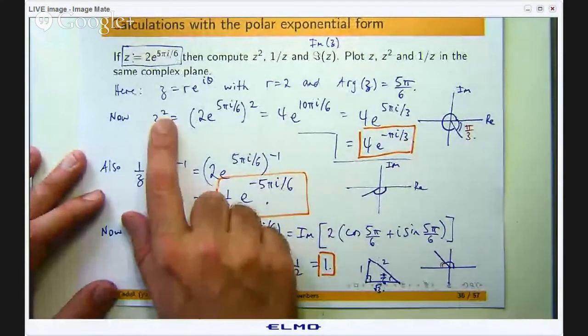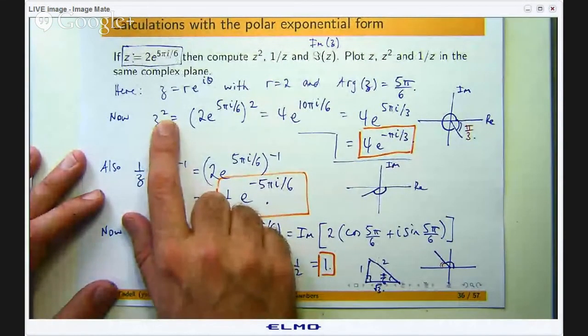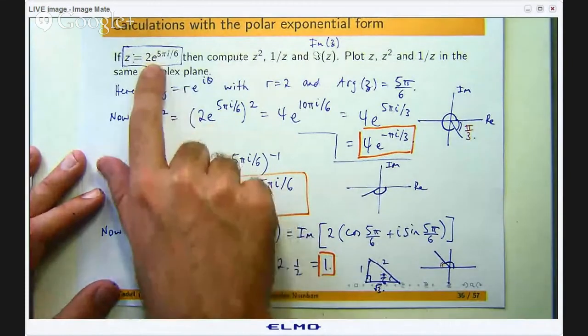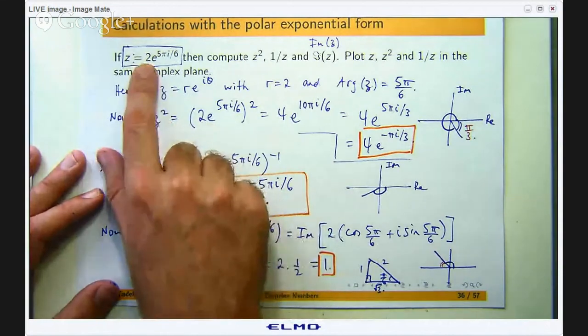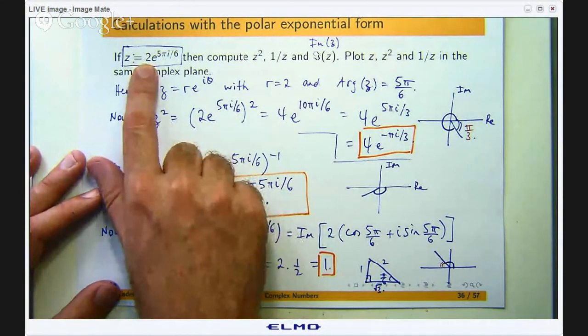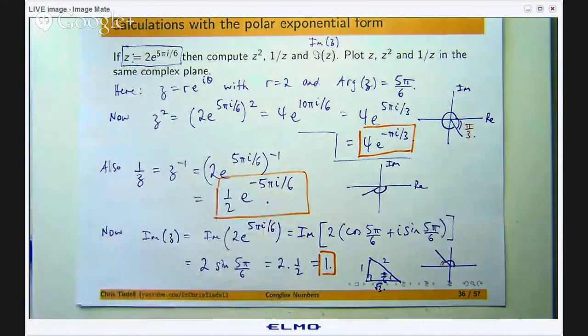Okay so when you, for example, take a square, you square the lengths and you double the angles. If it was a cubic here, you would take 2 to the power 3 and you would triple the angle associated with it and then you simplify.